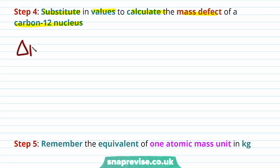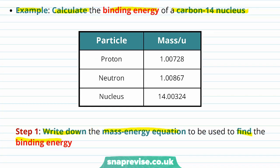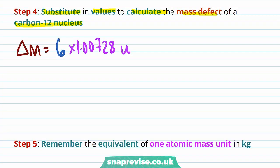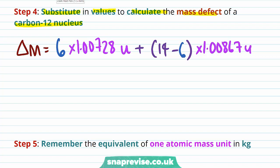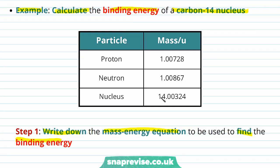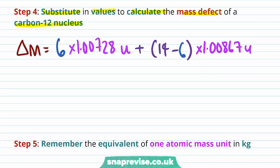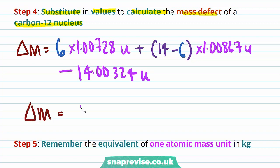Now substitute in values to calculate the mass defect. Δm = 6 × 1.00728 (mass of a proton in u) + (14 − 6) × 1.00867 (mass of a neutron in u) − 14.00324 (mass of the nucleus in u). This gives Δm = 0.1098 atomic mass units.